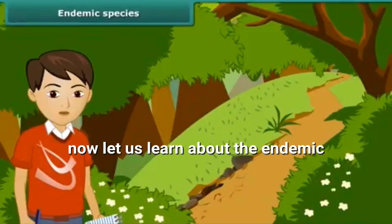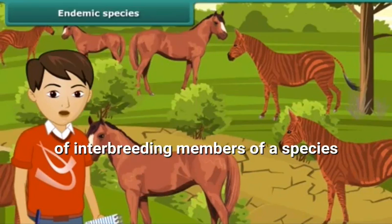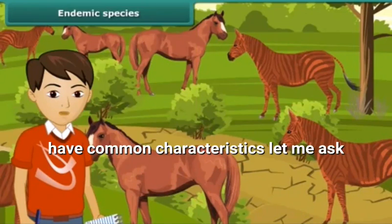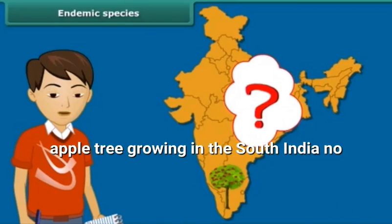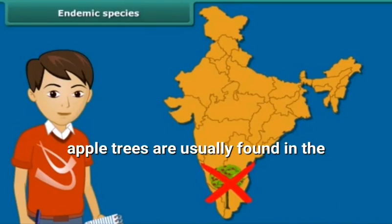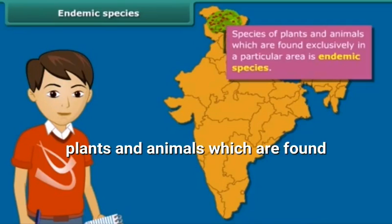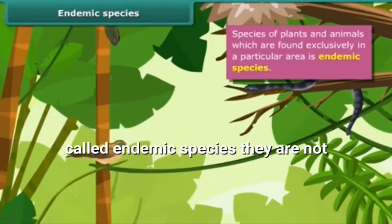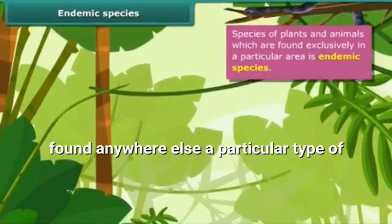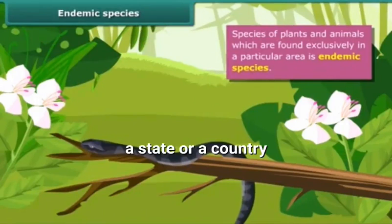Now let us learn about the endemic species. A species is a group of populations which are capable of interbreeding, with members of a species having common characteristics. Do you find an apple tree growing in South India? No. Apple trees are usually found in the northern parts of India. Thus, species of plants and animals which are found exclusively in a particular area are called endemic species. They are not found anywhere else. A particular type of animal or plant may be endemic to a zone, state, or a country.